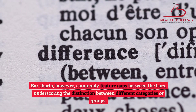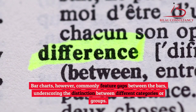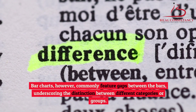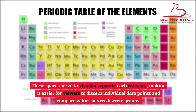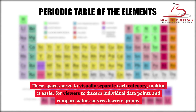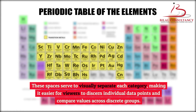Bar charts, however, commonly feature gaps between the bars, underscoring the distinction between different categories or groups. These spaces serve to visually separate each category, making it easier for viewers to discern individual data points and compare values across discrete groups.